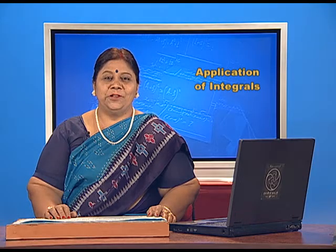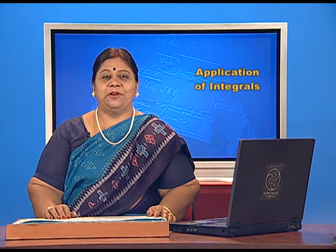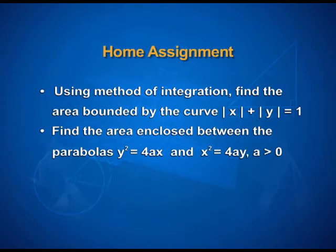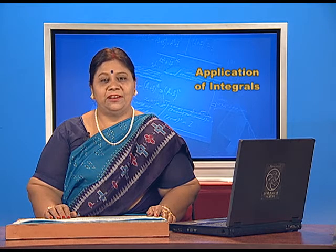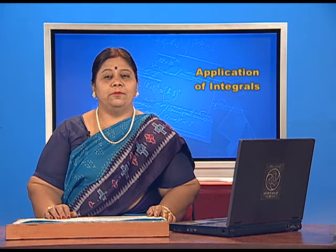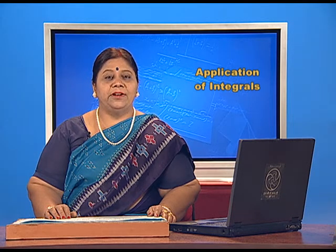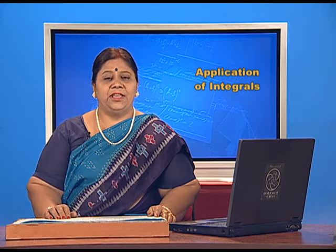Is it not an interesting problem? Students, note down the home assignment questions. Question 1: using integration, find the area bounded by the curve |x| + |y| = 1. Question 2: find the area enclosed between the parabolas y² = 4ax and x² = 4ay, where a > 0. In this chapter, we learned how to calculate the area below simple curves and the area between two given curves using integration. Thank you.